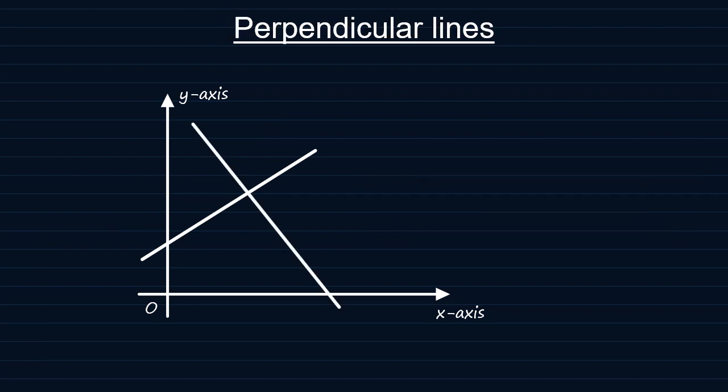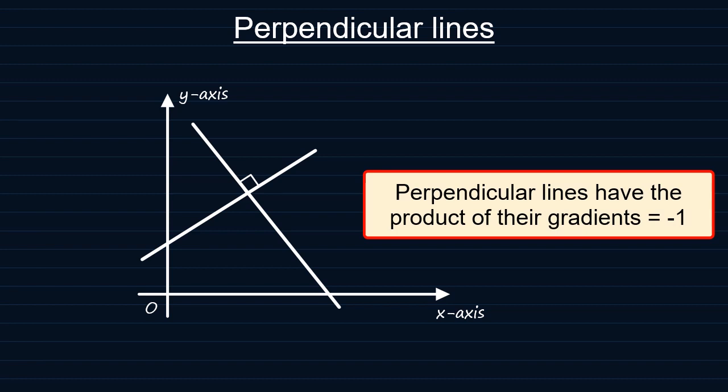Now, we know that perpendicular lines meet at right angles. The relationship between two perpendicular lines is that the product of their gradients is always equal to minus 1.